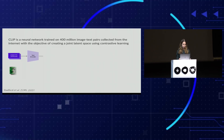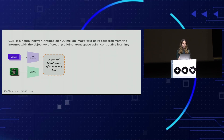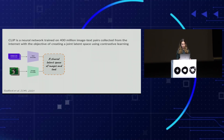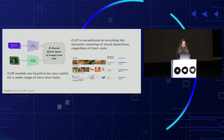CLIP is a neural network from OpenAI trained on 400 million image-text pairs collected from the internet, with the objective of learning a shared latent space between images and text. CLIP models are very useful for a wide range of zero-shot tasks, and it has been shown that CLIP is exceptional at encoding the semantic meaning of visual depictions regardless of their style. In our context, this means we can use a pre-trained CLIP model to extract features from both a sketch and a natural RGB image without any fine-tuning.